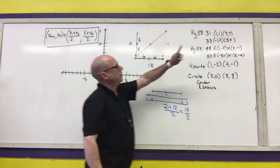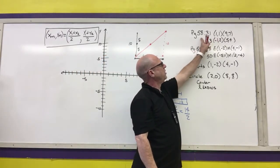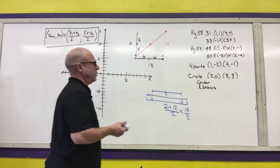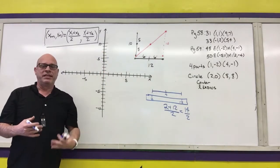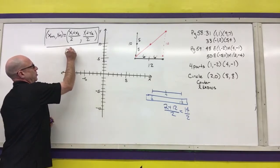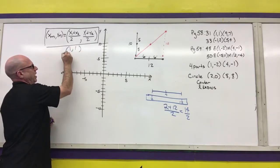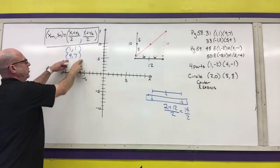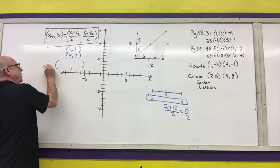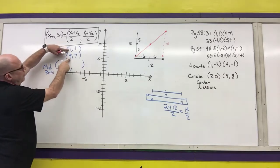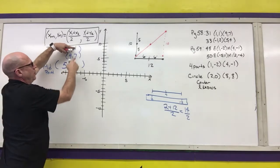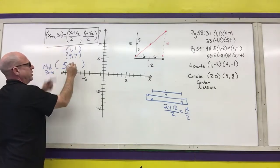To do some examples, I'm going to do problem number 31 on page 58. I want to know where the midpoint is between the points (1, 1) and the point (9, 7). Just like when finding the distance between two points, I write down the coordinates. So the two points I have are (1, 1) and (9, 7), and I'm just going to use the formula. My midpoint is going to be at the average of these two numbers: 1 plus 9 is 10, divided by 2 is 5. Then 1 plus 7 is 8, divided by 2 is 4. So the midpoint is (5, 4).